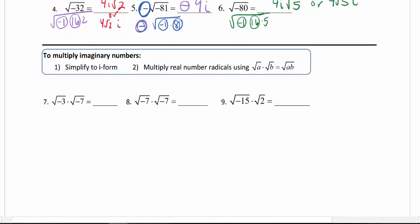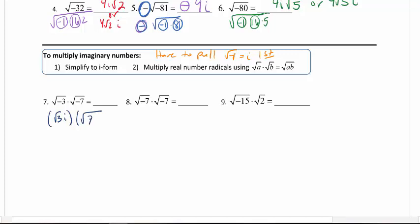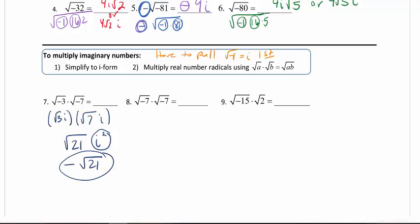Now we're going to go to multiplying imaginary numbers. The important part is you have to pull out the square root of negative 1 equal to i first. You cannot use our product rule or quotient rule that we learned in 10.3 and 10.4. You have to first pull the i out before you can combine the radicals, because the rule — square root of a times square root of b — only works with real numbers. For number 7, we have square root of 3 times i, and square root of 7 times i. I can combine the square roots to get square root of 21, and i times i gives i squared, which is negative 1. My answer is negative square root of 21. You have to pull out the i's first.